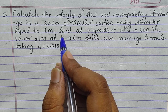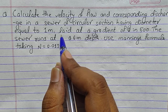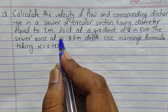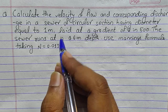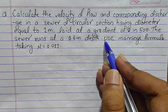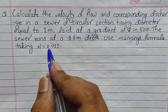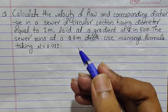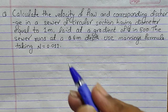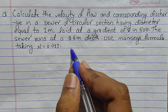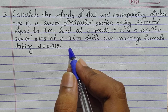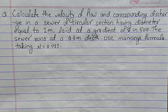If you haven't already, check out the videos about the formulas used for the design of the circular sewer running partially full and completely full. You can find the link in the description. Without wasting time, let's begin the solution of this numerical.